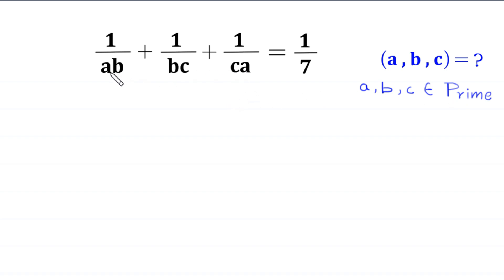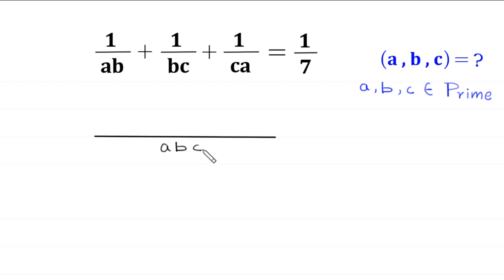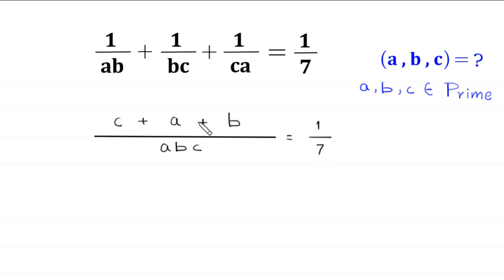First, we take the LCM of the three denominators ab, bc, and ca. The LCM of ab, bc, and ca is a times b times c. When you divide abc by ab we get c; abc divided by bc we get a; and abc divided by ca we get b. So the equation becomes a plus b plus c over abc.